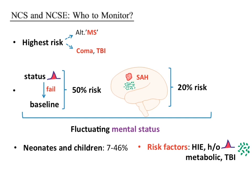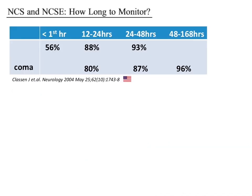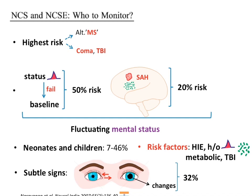A study by Narayanan et al from India identified children at risk by looking for subtle signs such as abnormal eye movements, nystagmoid movements, changes in pupillary diameter, or abnormal motor movements. About 32 percent of such patients were at risk of developing NCS or NCSE. Patients with structural injury or these subtle abnormal movements qualify for continuous EEG monitoring.